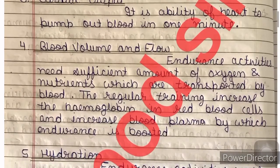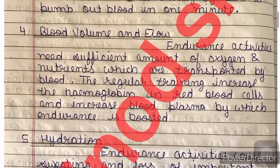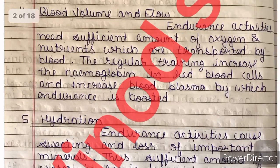Next is Blood Volume and Flow. Endurance activities need a sufficient amount of oxygen and nutrients, which are transported by blood. Regular training increases the hemoglobin in red blood cells. Regular exercise also increases blood plasma, by which endurance is boosted and RBC increases, which improves our endurance.